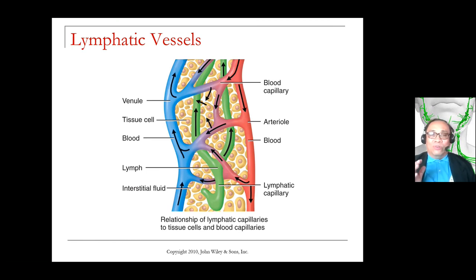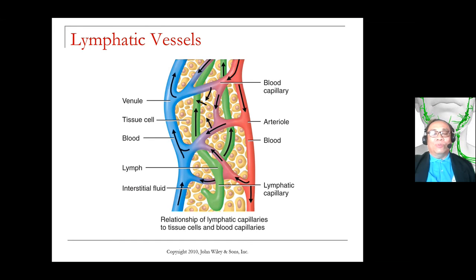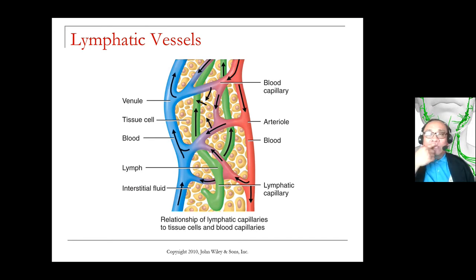What causes the fluid to enter the veins is a relatively weaker pressure — we call it osmotic pressure. What causes the fluids from the arteries to leave the blood vessel is hydrostatic pressure, and what causes the fluids to drain back into the venous side is osmotic pressure. But osmotic pressure is less than hydrostatic pressure. If you view the organ as a room where water enters through a big door but leaves through a small window — that would be the case.